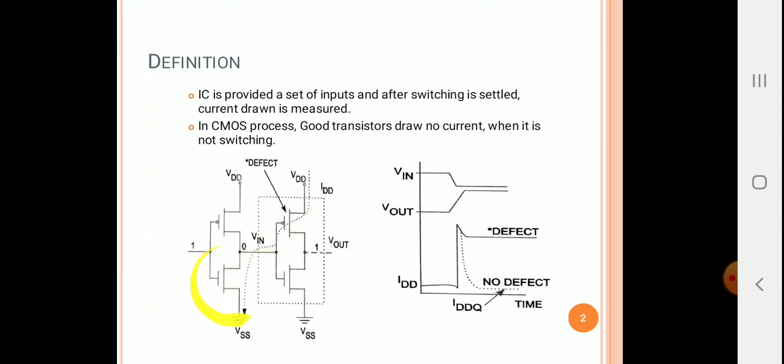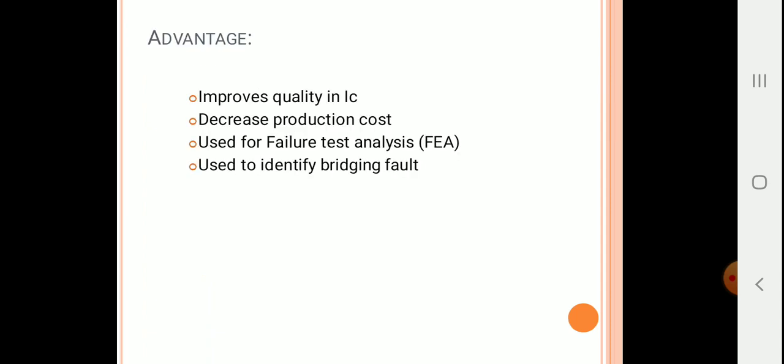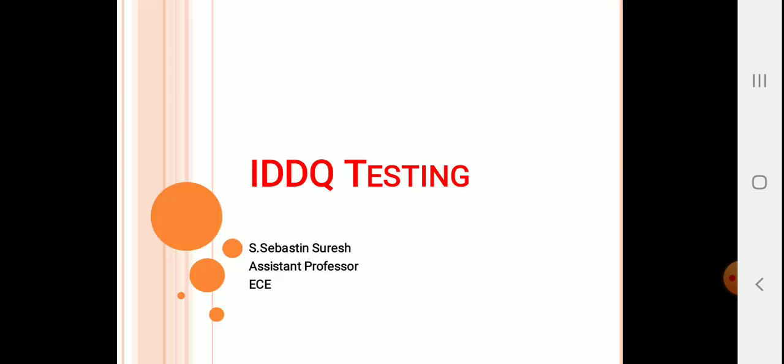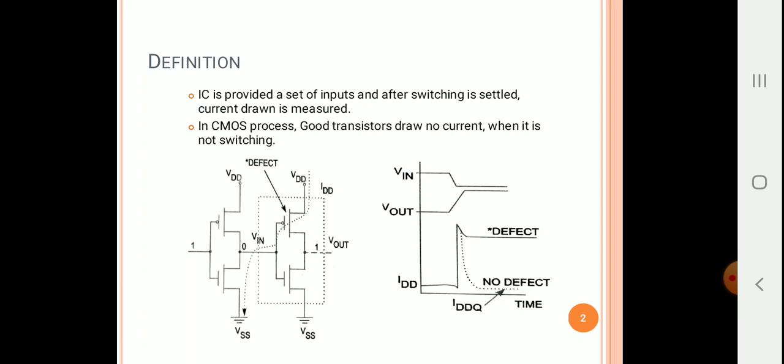via the first stage NMOS transistor which is on at the first stage. Initially when zero has been given, this transistor will be off, but since this input is still available at the input of this transistor, this transistor is on during this period, so there will be a notable amount of current flowing from the PMOS transistor towards the NMOS transistor.